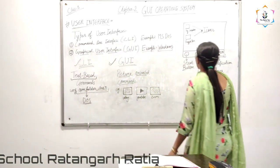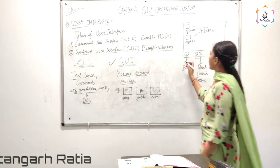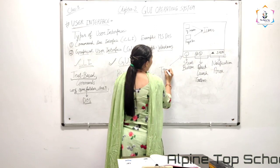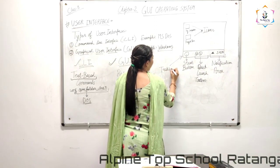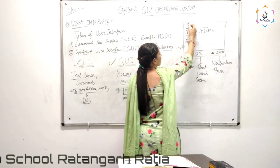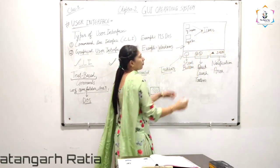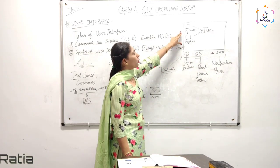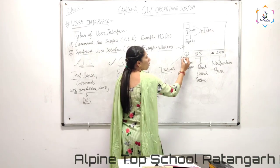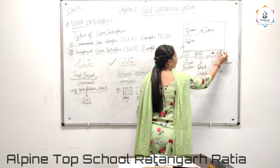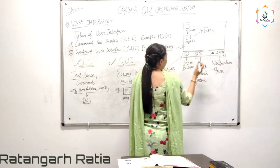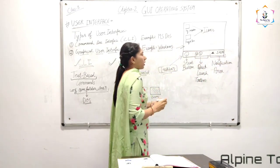Now the next topic is our taskbar. What is the taskbar? The taskbar is on our computer's desktop. When we turn on the computer, the first screen that is shown to us is known as the desktop. At the very bottom of the desktop, what you see there — that is called the taskbar.